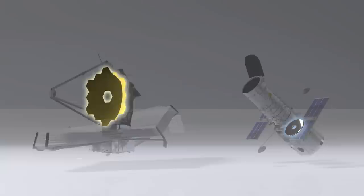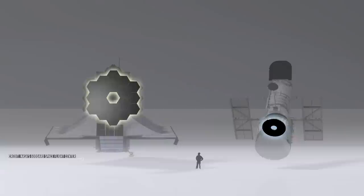Webb collects seven times more light than Hubble, which, for the same exposure time, allows it to photograph objects 10 to 100 times fainter.